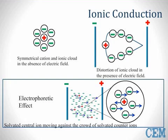The second heating mechanism is ionic conductance. Positively or negatively charged ions will be distorted by the electromagnetic field, which causes them to move toward the positive or negative sides of the field. This is known as the electrophoretic effect.